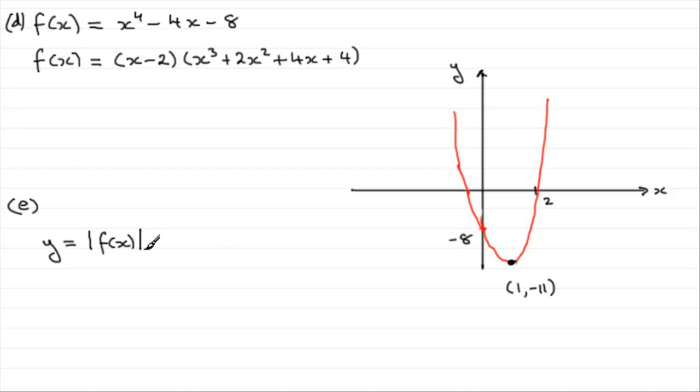Well, essentially, it means that all Y values are positive, and the Y values down on this stretch are going to be negative at the moment, so they get mirrored in the X axis.